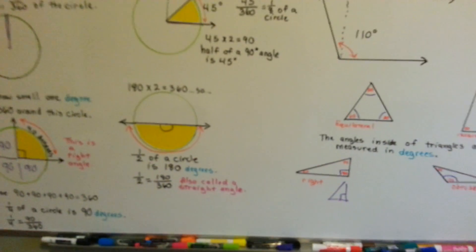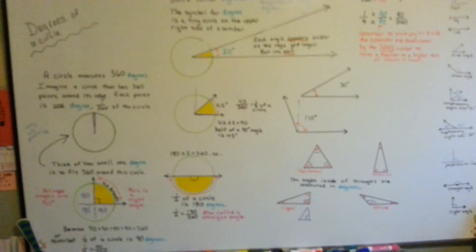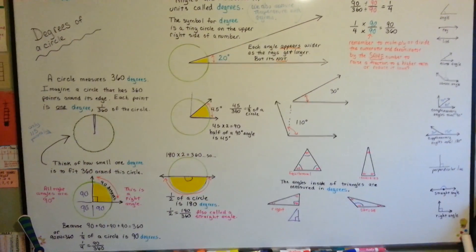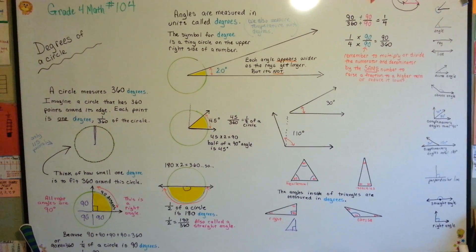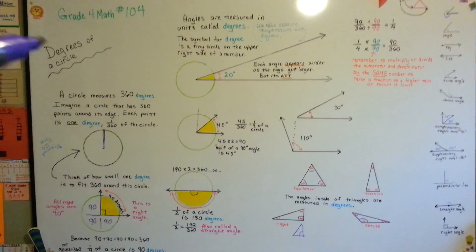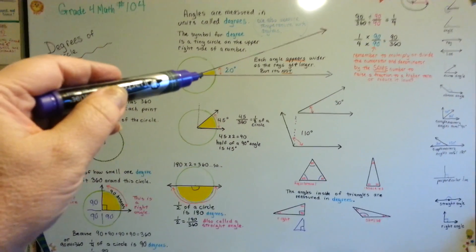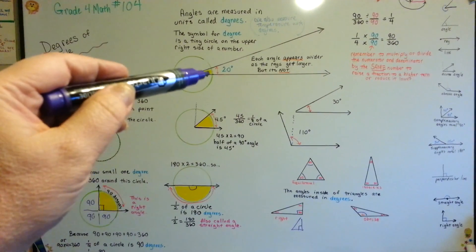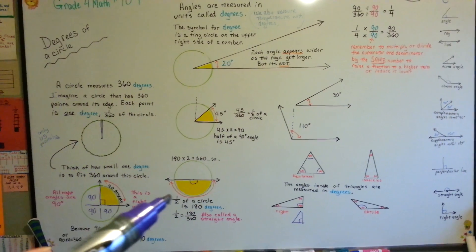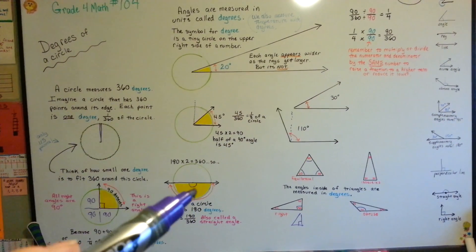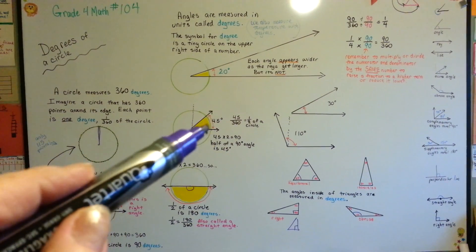So those are degrees of a circle. Remember, there's 360 of them. And remember that even though the rays get longer, the measure doesn't get any bigger — it's still the same measure. Remember that one-fourth of a circle is 90 degrees, half of a circle is 180, and half of a 90-degree angle is 45.